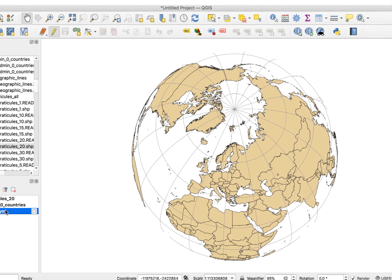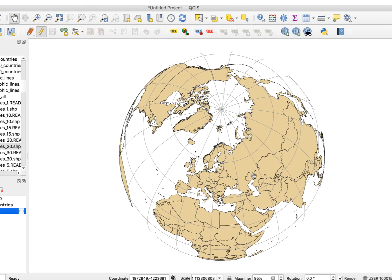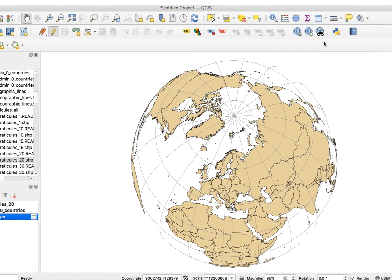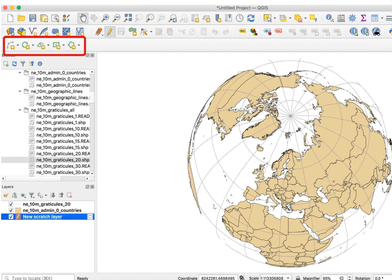Next, you need to bring up the shape digitizing toolbar. To do this, right click anywhere in an empty spot on the toolbar and select it. A new toolbar will appear. Click on the little arrow next to the Add Circle icon and select Add Circle from Two Points.